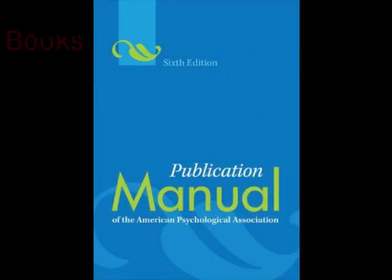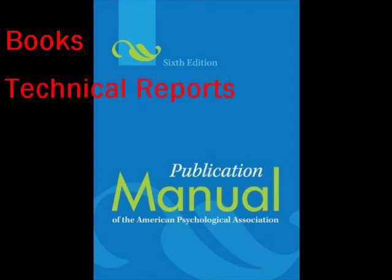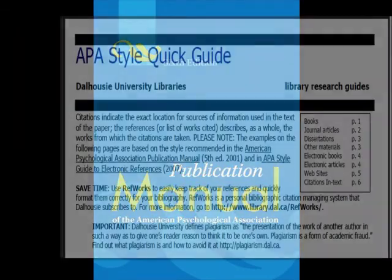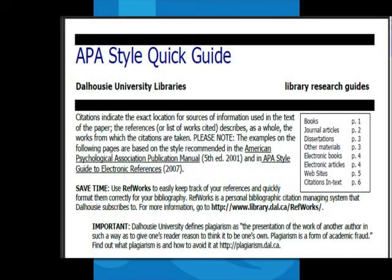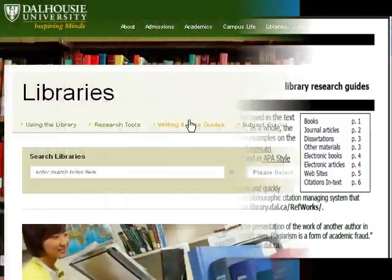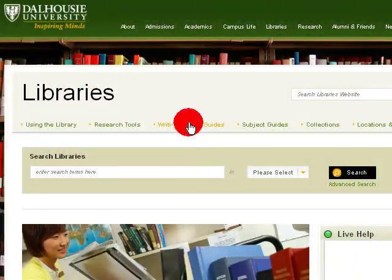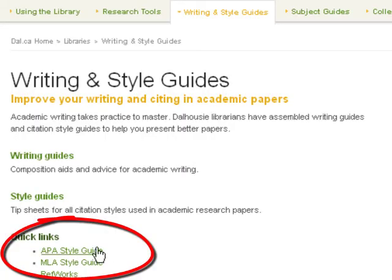Although this LibCast focuses on APA citations for journal articles, APA style is also used to cite books, technical reports, and other types of scholarly information. For more information on APA style, check the APA style quick guide — click on the link or access the guide from the library's How Do I pages.